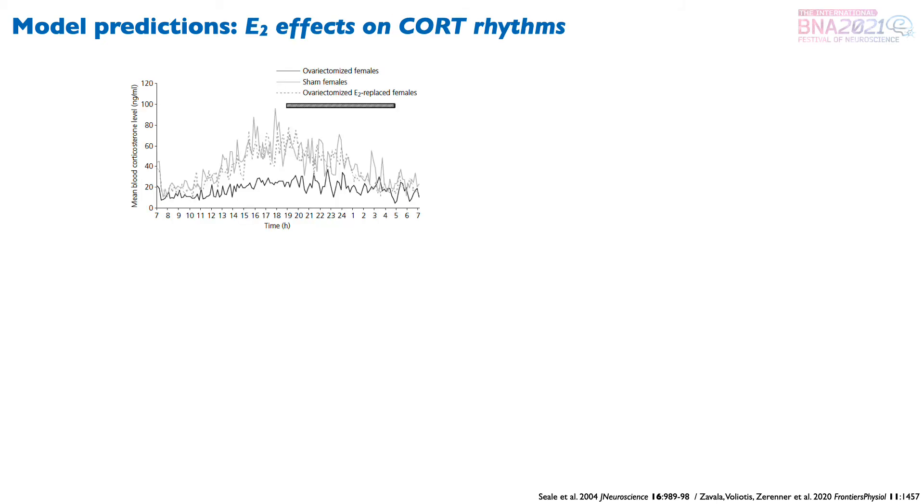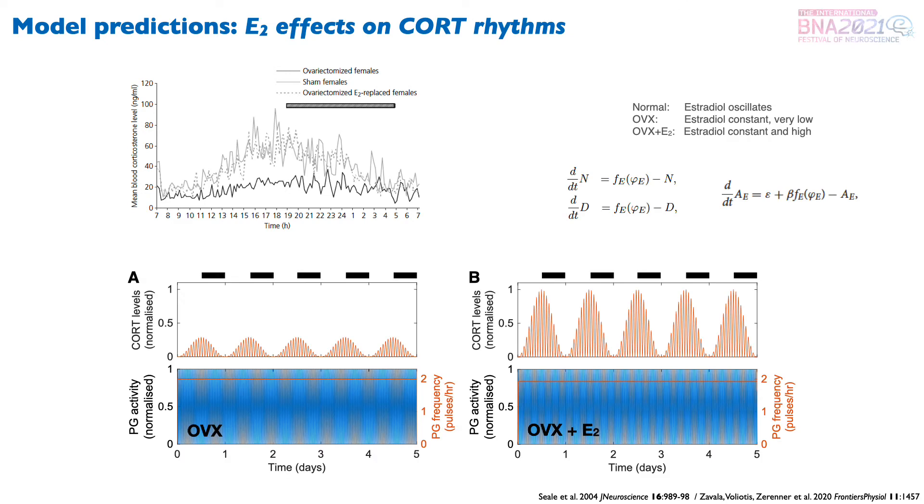Next, we used the model to predict the effects of ovariectomy and their reversal by estradiol implants. We did this by simulating the loss of estrous rhythmicity caused by ovariectomy, which, in our model, affects both the KNDy network and the amplitude of the estrous cycle itself. Our model predicts about a 70% decrease in the circadian amplitude of cortisol and a sustained high frequency of the pulse generator, which is as if the pulse generator remains stuck in the diestrus phase of the cycle.